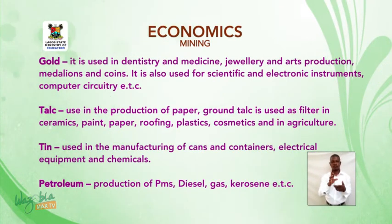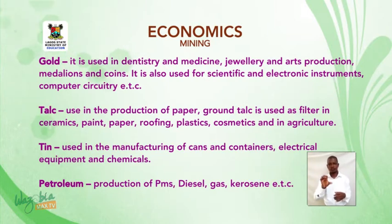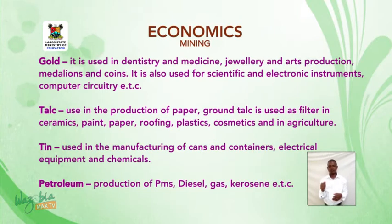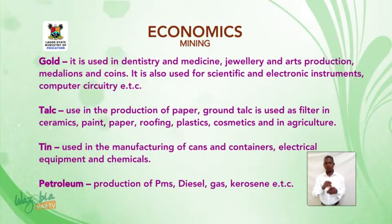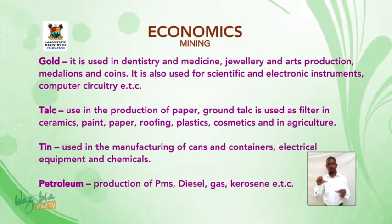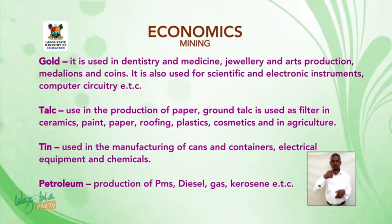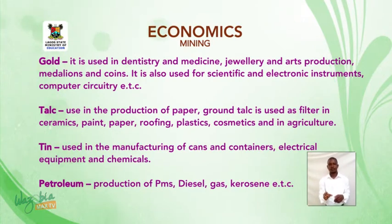Talc — talc is used in the production of paper. Ground talc is used as filler in ceramics, paint, paper, roofing, plastics, cosmetics and in agriculture. Tin — tin is used in the manufacturing of cans and containers, electrical equipment and chemicals. Petroleum — production of PMS, diesel, gas, kerosene and so on and so forth.